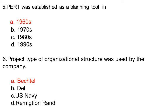Project type of organization structure was used by the company: option A Bechtel, option B Dell, option C U.S. Navy, option D Remington Rand. The correct answer is option A, Bechtel.